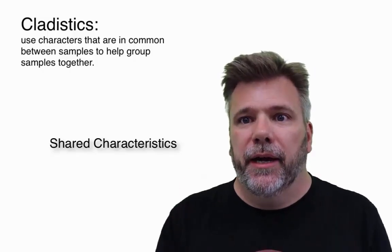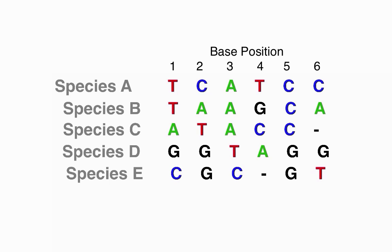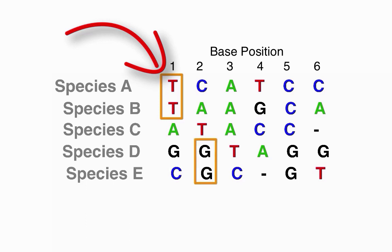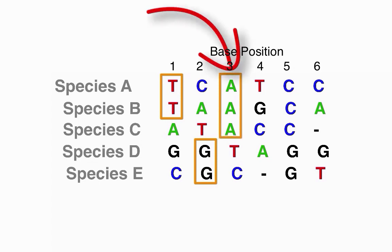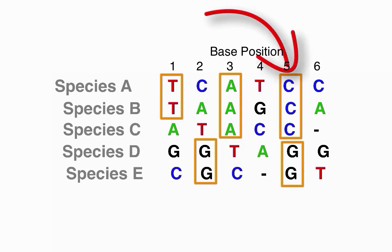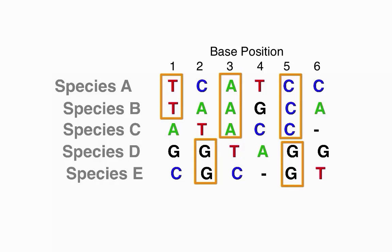Looking for shared characteristics. Let's apply the cladistics approach to our data. So, what do we see? Species A and B both have a T. Species D and E both have a G. Species A, B and C have A's at the third position. Species A, B and C all have C at the fifth position. And species D and E have G's at the fifth position. And these are all the base positions that end up grouping things together.